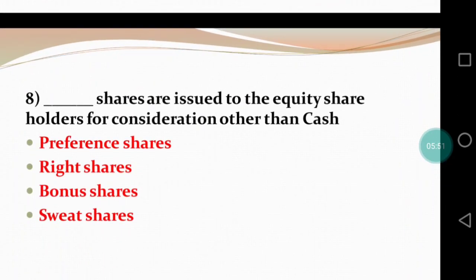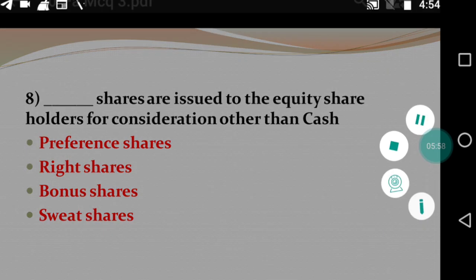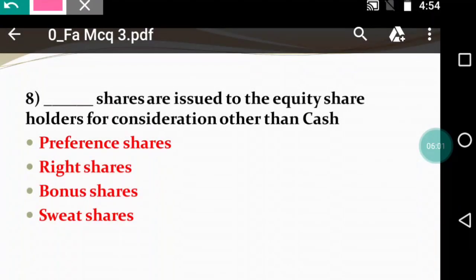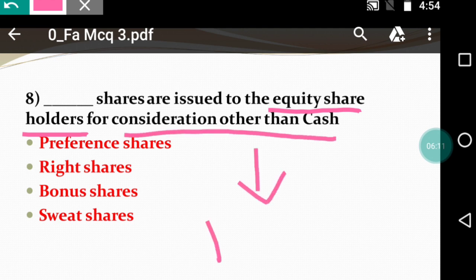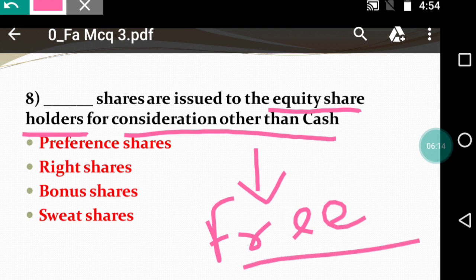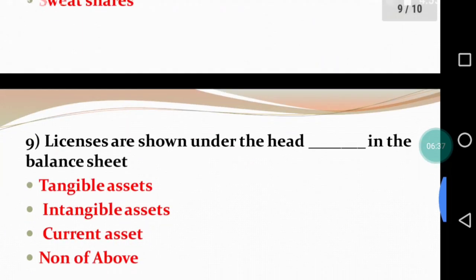Question 8: Dash shares are issued to equity shareholders for consideration other than cash. The options are: preference shares, right shares, bonus shares, and sweet shares. Consideration other than cash means free. Bonus shares are given free to equity shareholders based on a ratio when the company makes good profit. Bonus shares are issued to equity shareholders only, not to preference shareholders, because they belong to those holding ordinary share capital.